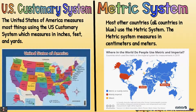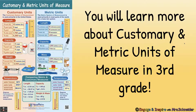The U.S. customary system: here you see a picture of the United States. The United States of America measures most things using the U.S. customary system, which measures in inches, feet, and yards. The metric system — see all of the blue countries? — is used in most other countries and measures in centimeters and meters. You will learn more about customary and metric units in third grade, because there are other things you can measure, like liquid, weight, and temperature.